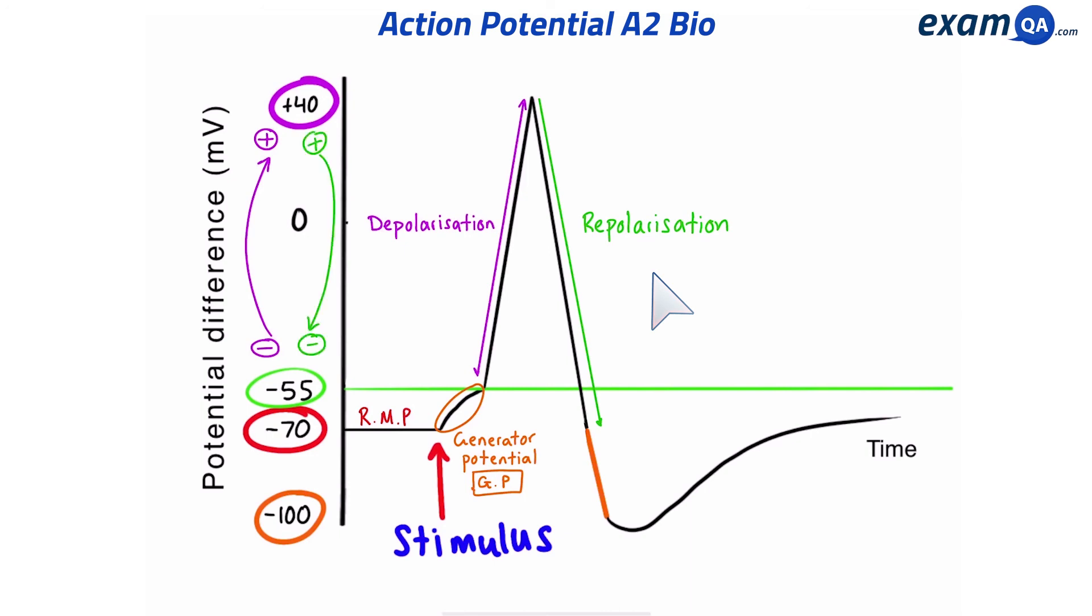Again, the charge is going from plus back to the original minus. However, because of the slow closing potassium channels, it managed to go a little bit lower than intended, all the way to minus 100. This part is called hyperpolarization.